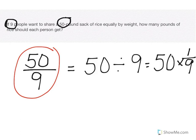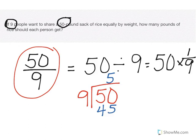I'll set up the division problem like long division. We have 50 divided by 9. 9 goes into 50 five times; 5 times 9 is 45. Subtracting, I get a remainder of 5, which is smaller than 9 and there's nothing to bring down. So 5 is my remainder numerator and 9 is my denominator. Each of the 9 people is going to get 5 whole pounds of rice and 5 ninths of a pound — a total of 5 and 5 ninths pounds of rice from the 50-pound sack.